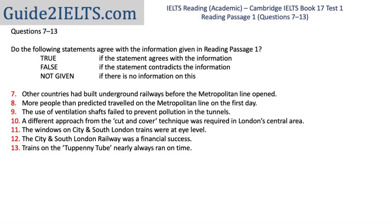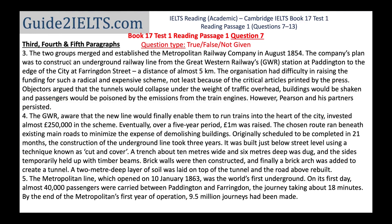Let's look at a few examples. We'll start with the seventh question. It has the capitalized word 'Metropolitan,' so I'll keep 'metropolitan line' in mind as a possible location keyphrase. Another word to keep in mind is 'countries' — I could find 'country,' 'nation,' or names of countries in the passage. Scanning the passage, 'metropolitan' is easy to find because it's capitalized. It first appears in the third paragraph as the name of a company — Metropolitan Railway Company. The phrase 'metropolitan line' first appears at the beginning of the fifth paragraph.